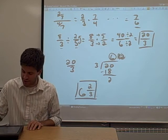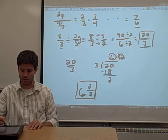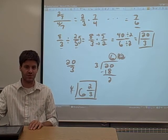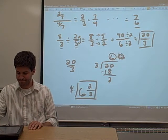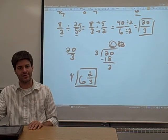So it's possible on an Accuplacer test that instead of an answer of 20/3, you might want an answer of 6 and 2/3. So this is probably the one that you want. Alright, so that's dividing fractions. In the next video we're going to add and subtract fractions.